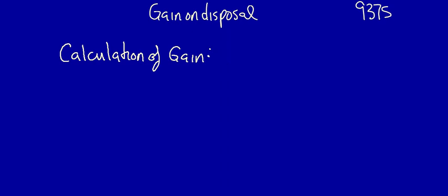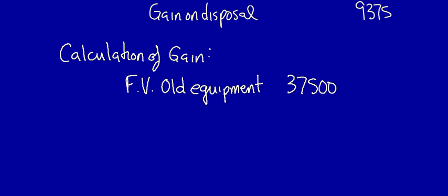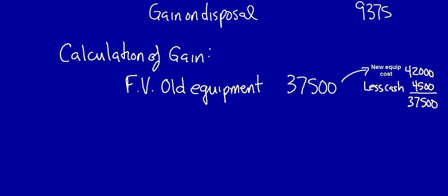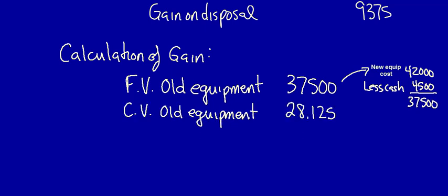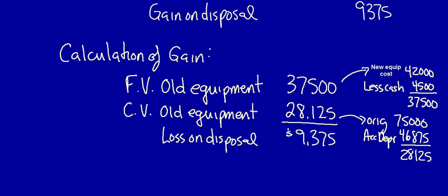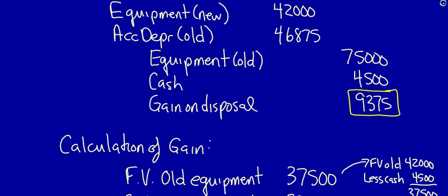I take the fair value of the old equipment — that's $37,500. Now I need the carrying value of the old equipment, calculated as the original cost, $75,000, less the accumulated depreciation, $46,875. Note, however, that I don't actually have to calculate this — I can just go back to the entry and plug this number right here.